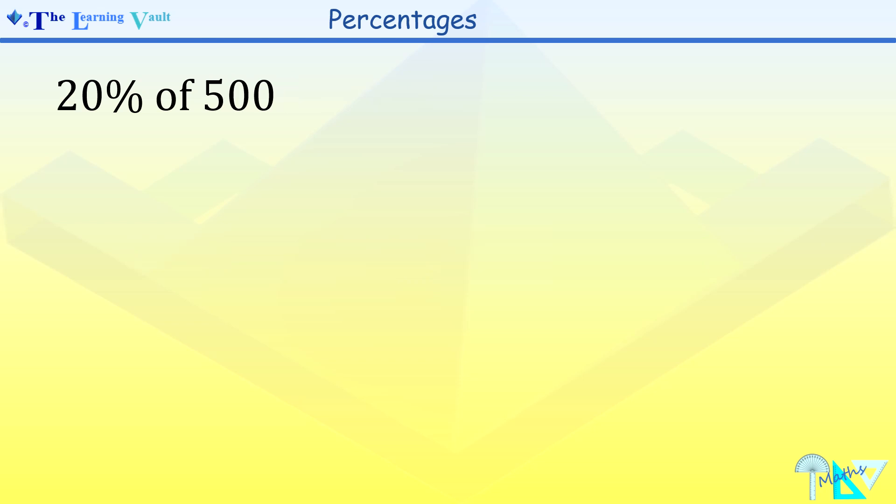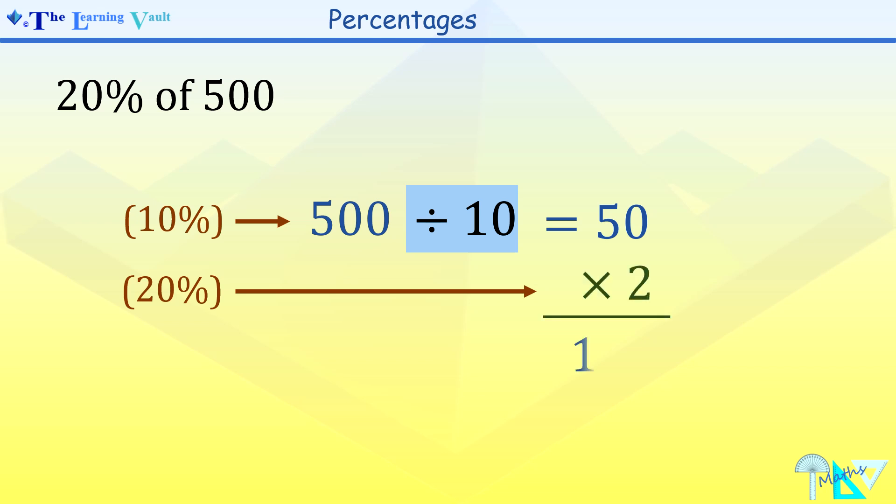Now in finding 20% of 500, we find 10% first, which means we divide by 10. So 500 divided by 10 equals 50. Next, to find our 20%, we'll multiply our answer 50 by 2, and that will give us 100. So 20% of 500 equals 100.